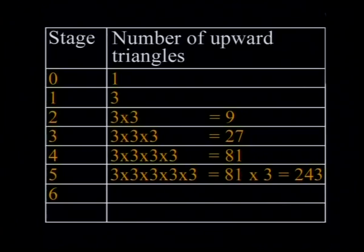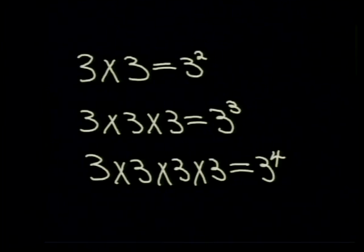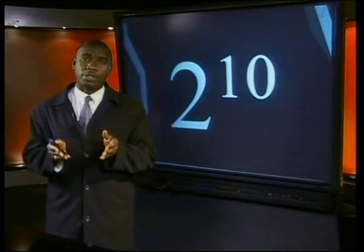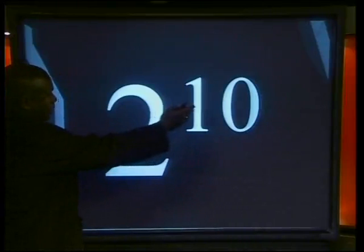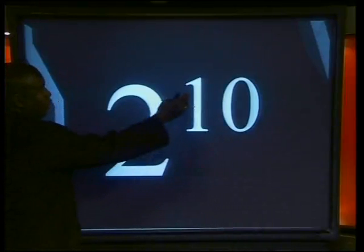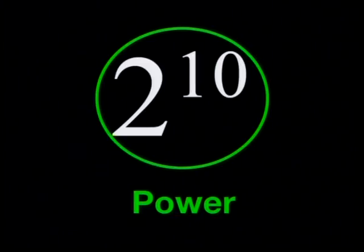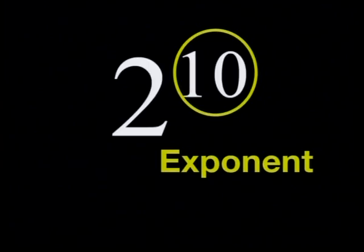Let us recap. We learned a new notation in this lesson — a short way to write a number multiplied by itself many times. What does the 2 stand for? It is the number that has to be multiplied. What does the 10 stand for? It tells us how many times the 2 has to multiply itself. This is much easier than writing 2 ten times. We say '2 to the power of 10.' This is called a power. The 2 is called the base, and the 10 is called the exponent.